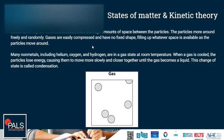Gases have very low densities because there are huge amounts of space between the particles. Particles move around freely and randomly. Gases are easily compressed and have no fixed shape, filling up whatever space is available. Many non-metals, including helium, oxygen, hydrogen, and nitrogen, are in the gaseous state at room temperature. When the gas is cooled, the particles lose energy, causing them to move more closely together because they move slower, until the gas becomes a liquid due to forces of attraction between the now closer particles.